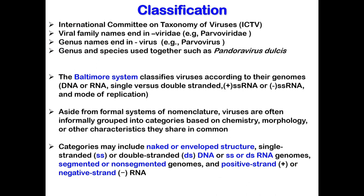In biology, taxonomy is the scientific study of naming, defining, and classifying groups of biological organisms. According to the International Committee on Taxonomy of Viruses, viral family names end in '-viridae', for example Parvoviridae, and genus names end in '-virus', for example Parvovirus. Genus and species are used together, such as Pandoravirus dulcis.